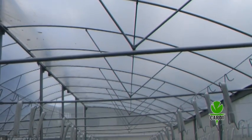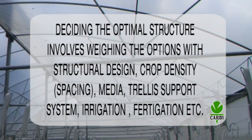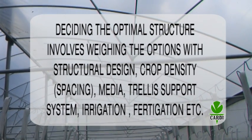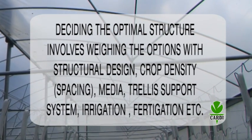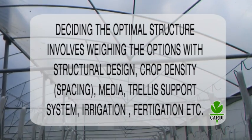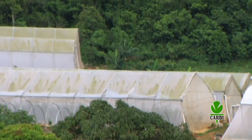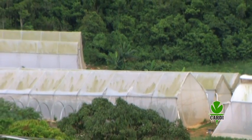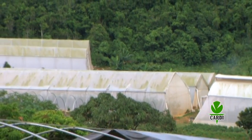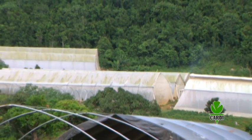This involves weighing the options with structural design, crop density or spacing, media, trellis support systems, irrigation, fertigation, etc. There are a number of factors that the PA farmer should be mindful of when selecting a suitable site to set up his structure.